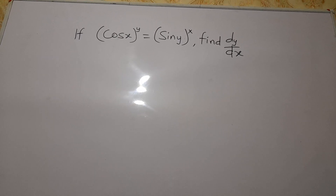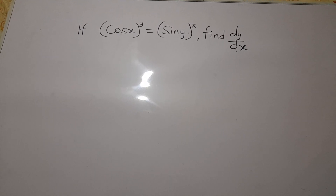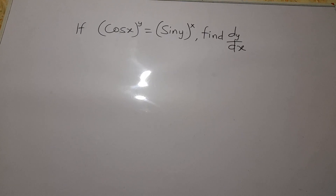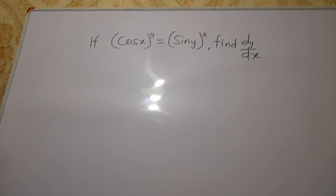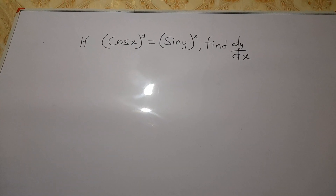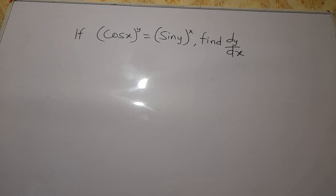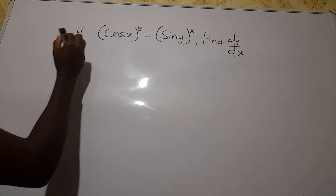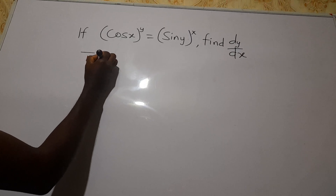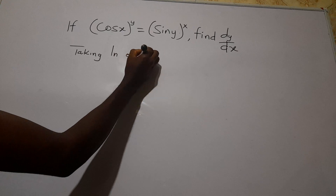Our problem for the day: if (cos x)^y is equal to (sin y)^x, we should find dy/dx. To solve this, you need to find the natural log of both sides, so we start by taking the ln of both sides.